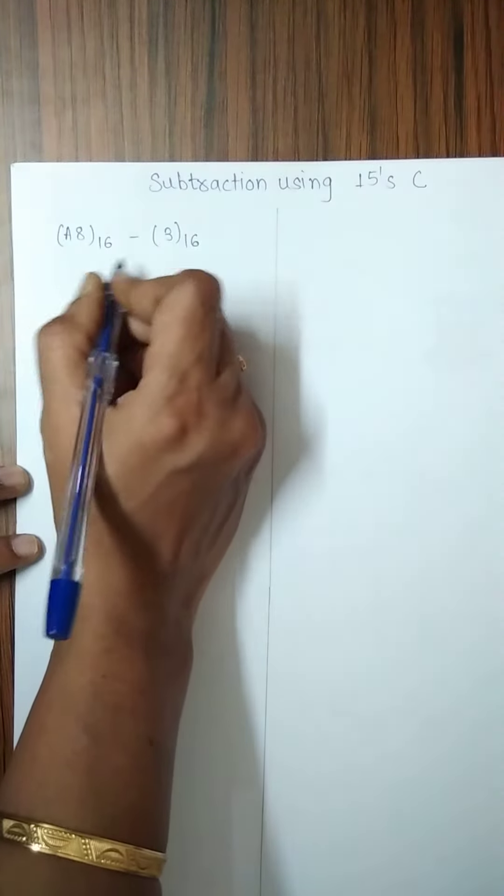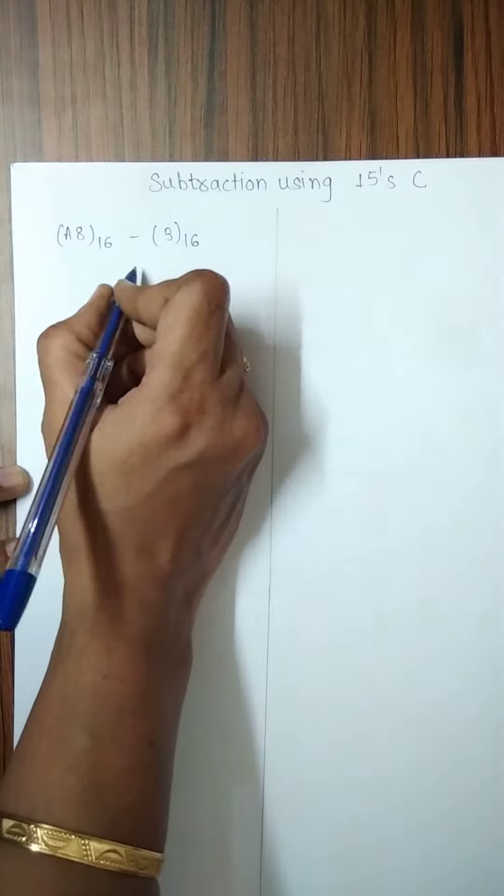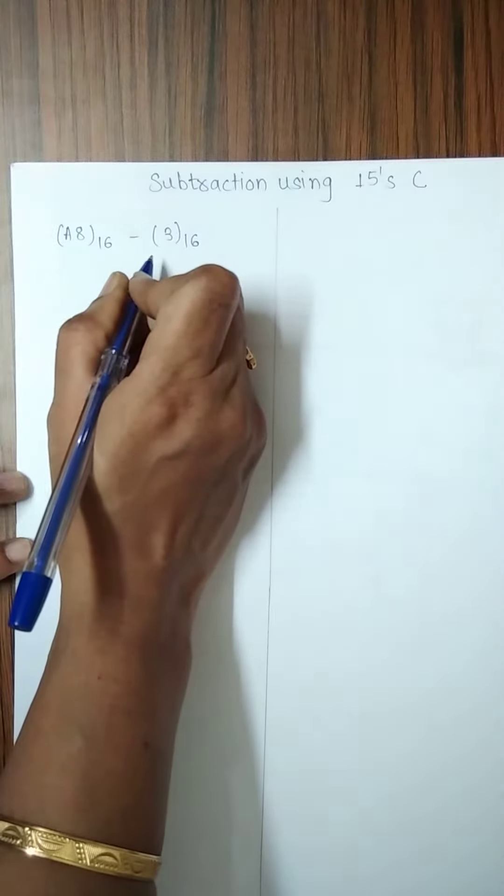Let us see the subtraction of A8 minus 3 using 15's complement. Here two numbers are given in hexadecimal.